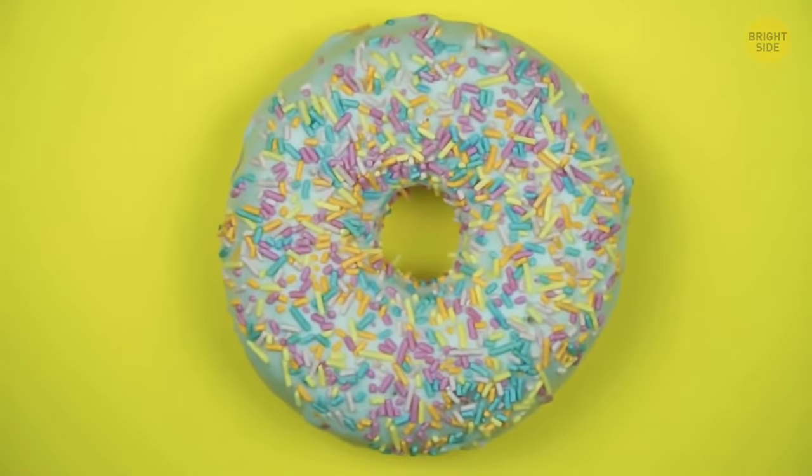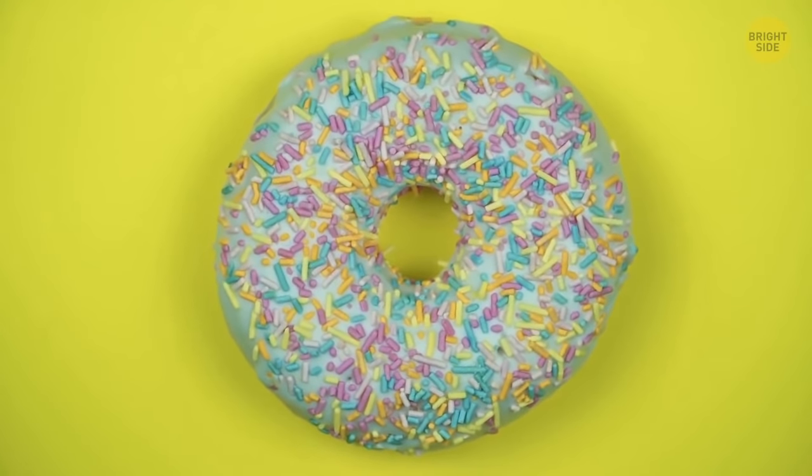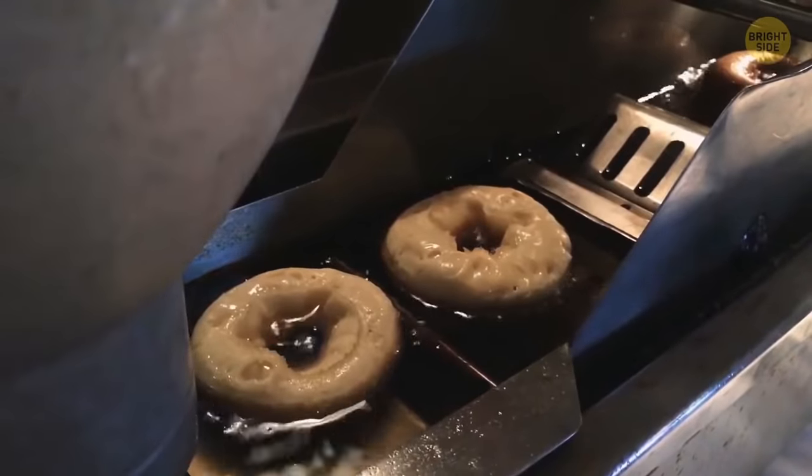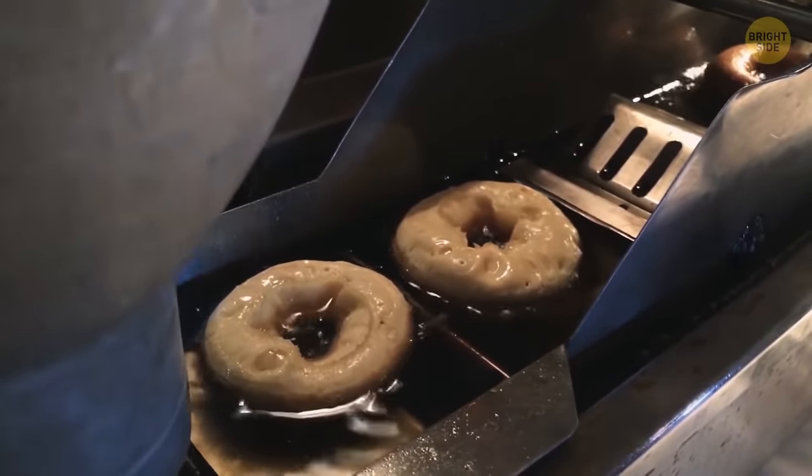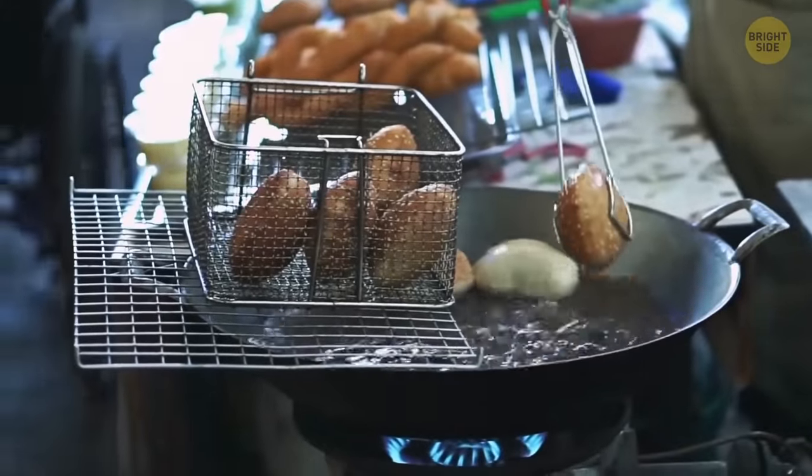Donuts have holes in them so that the inside and outside cook evenly. Before the holes were added, the inside would often be greasy and doughy while the outside was crisp.